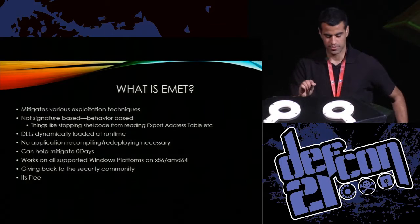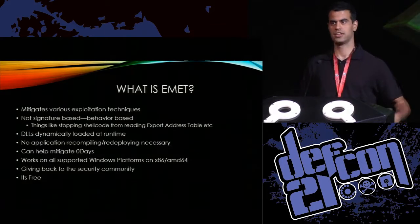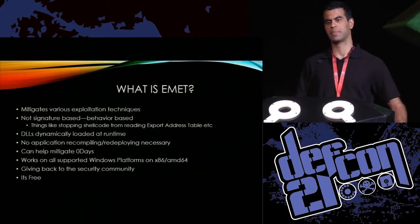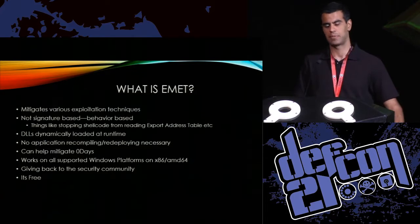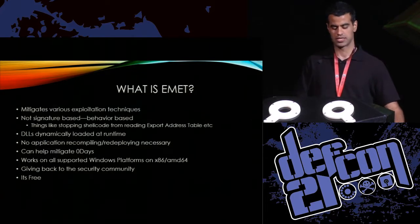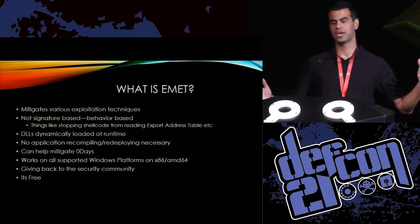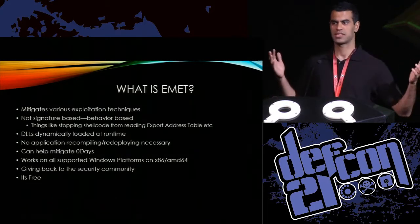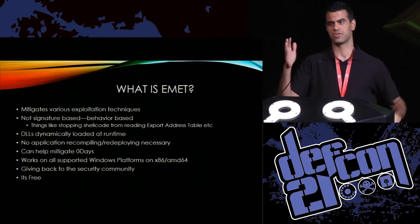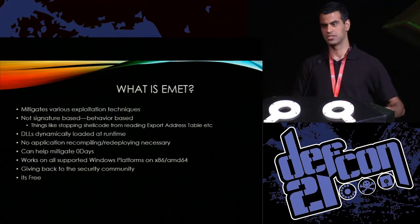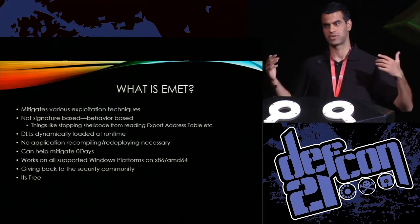What is EMET? EMET is a tool that mitigates different exploitation techniques. It's been historically mostly for memory corruptions and stopping exploits that take advantage of memory corruptions. One thing about it is that it's not signature based — rather it's behavior based. So you don't need signatures because it just looks for behaviors, common shellcode behaviors, for example. So it could stop things that people don't know about, or even zero days.